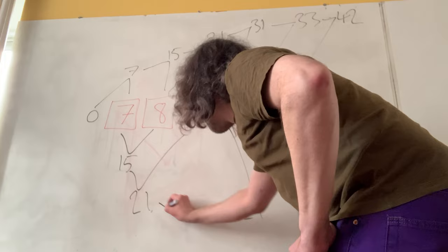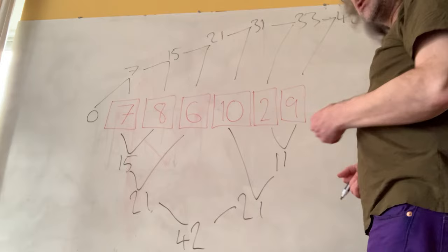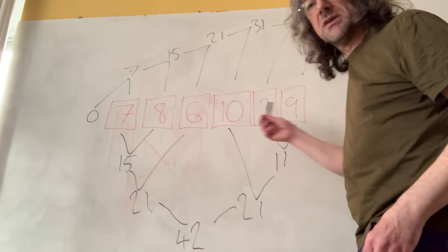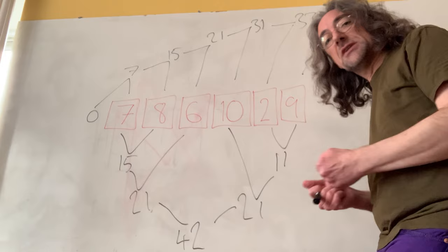Same answer. Fortunately for us, we're always going to get the same answer as long as the sequence of numbers that we're adding up is the same sequence, and that's because adding up makes the natural numbers a monoid with respect to zero and addition.